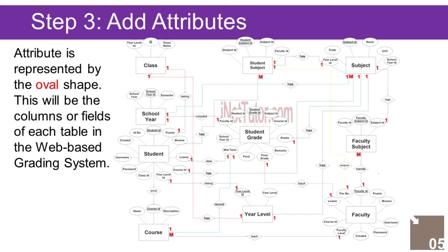ID — Primary Key, represented with underline. Year Level ID — Foreign Key. Class Name. School Year entity has the following attributes: School Year ID — Primary Key, represented with underline. School Year. Semester.